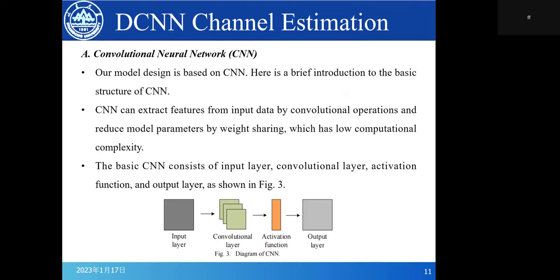First is CNN. Our module design is based on CNN. Here is a brief introduction to the basic structure of CNN. CNN can extract features from input data by convolutional operations and reduce model parameters by weight sharing. The basic CNN consists of input layer, convolutional layer, activation function, and output layer as shown in Figure 3.